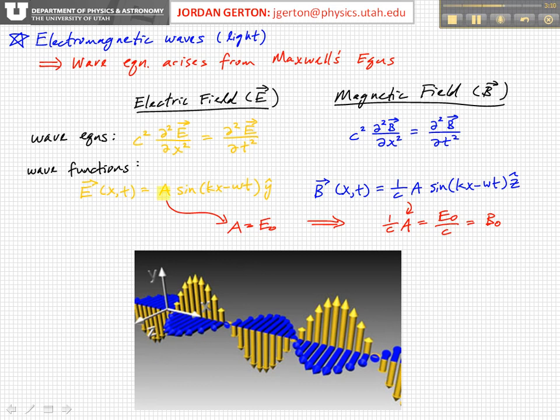So if we make A is equal to E0, that's the magnitude of the electric field component, then the magnitude of the magnetic field component is just E0 over C. And so here are two examples of wave equations and their solutions, the wave functions that result from those equations and kind of the graphical form of what they look like.